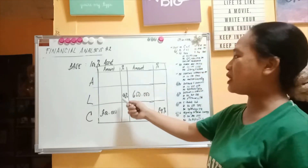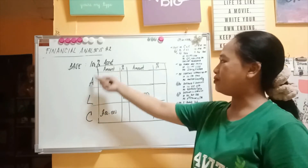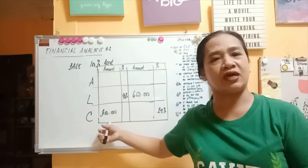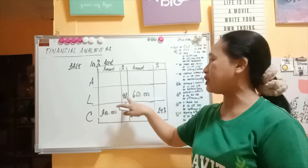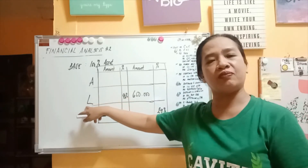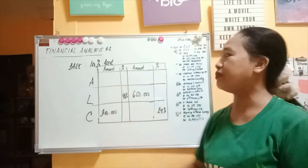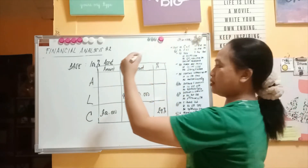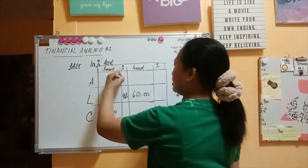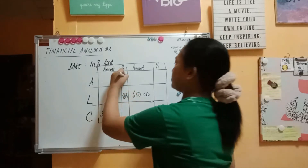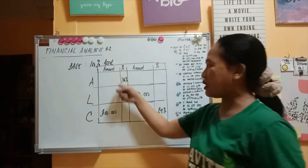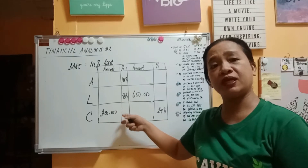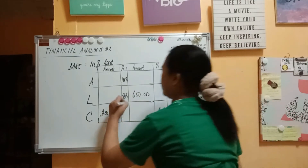Let's start. Suppose the only given information is: capital = 300,000 and liabilities = 48%. Remember, the base is always the asset, so we put 100% for assets. Then 100% minus 48% gives us 52%.